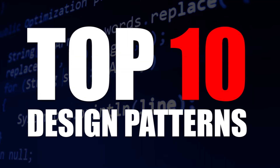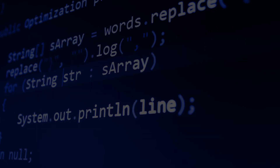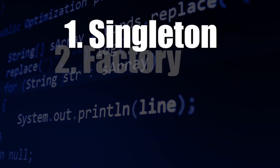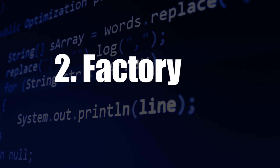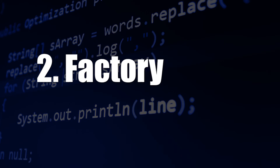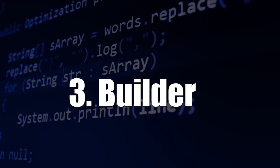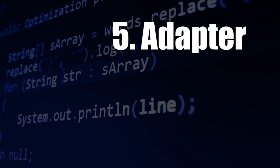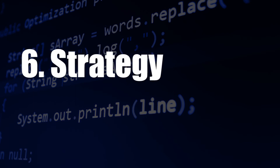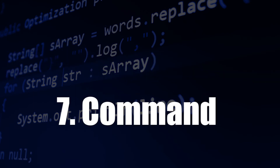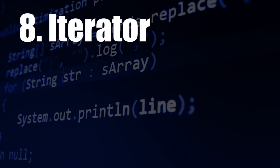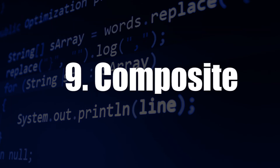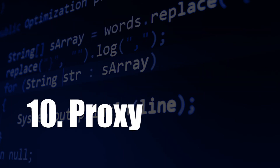At first I will start with the top 10 most popular design patterns that most programmers must know. Those are: 1. Singleton, 2. Factory — both Factory Method and Abstract Factory, 3. Builder, 4. Observer, 5. Adapter, 6. Strategy, 7. Command, 8. Iterator, 9. Composite, 10. Proxy.